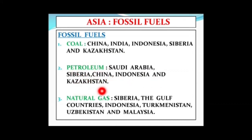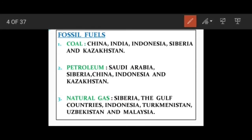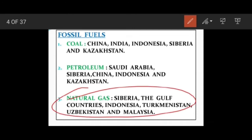Petroleum and natural gas are mostly found together, so you will find that almost similar countries have both. Natural gas is found in Siberia, the Gulf countries, Indonesia, Turkmenistan, Uzbekistan and Malaysia.